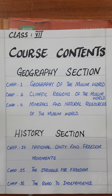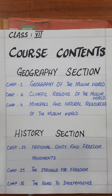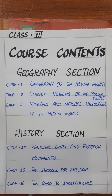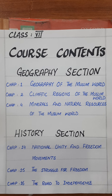First of all, we have a geography section and then we have a history section. In the geography section, we have chapter number one: Geography of the Muslim World. Then chapter number two: Climatic Regions of the Muslim World. Chapter number four: Minerals and Natural Resources of the Muslim World. Then in the history section, we have chapter number 14: National Unity and Freedom Movements. Then chapter number 15: The Struggle for Freedom. And then chapter number 16: The Road to Independence.